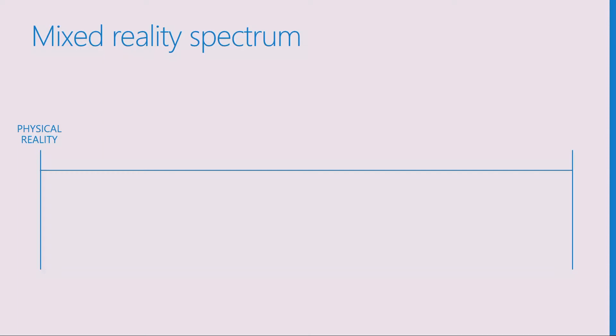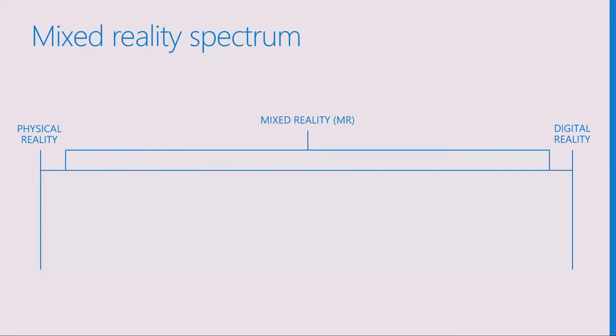Because we're talking about a spectrum, let's look at the polar opposites on each side. On one end, physical reality; on the other end, digital reality. Anytime you add some virtual or digital people, places, and things into your physical reality, we consider that the beginning of the Mixed Reality spectrum. Similarly, anytime you add physical people, places, and things into your digital reality, that's on the Mixed Reality spectrum as well. Everything that's not 100% physical and not 100% virtual is this Mixed Reality continuum.